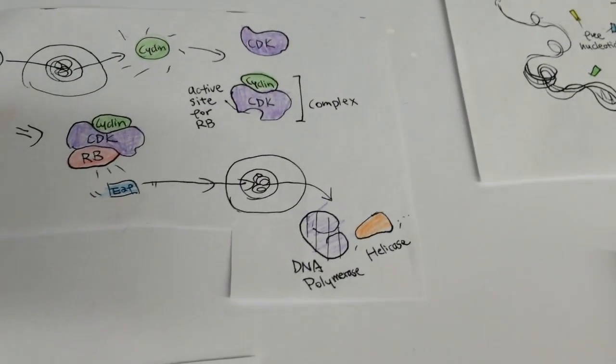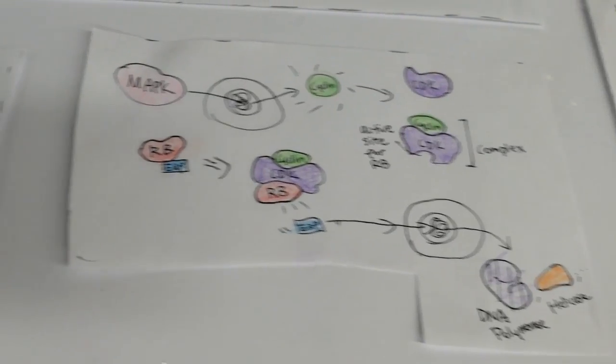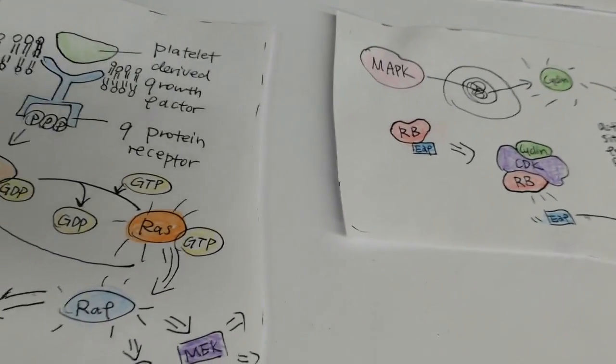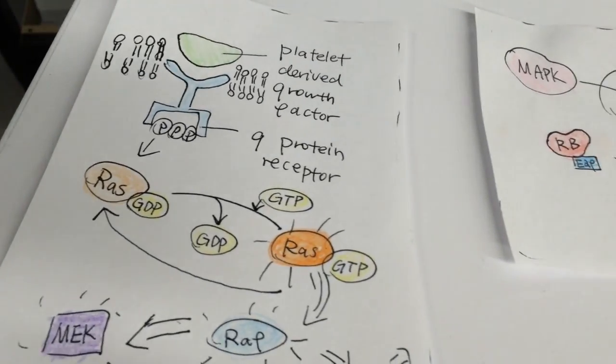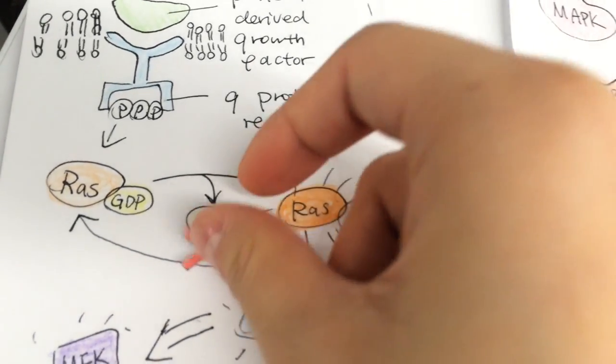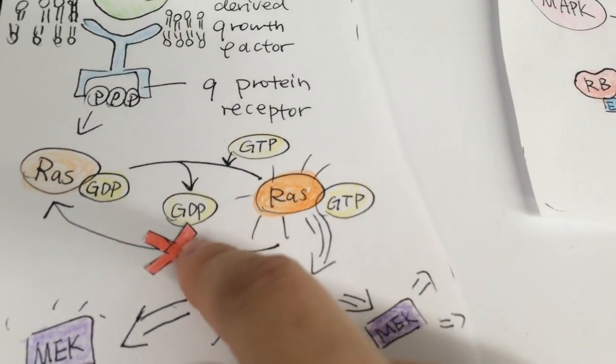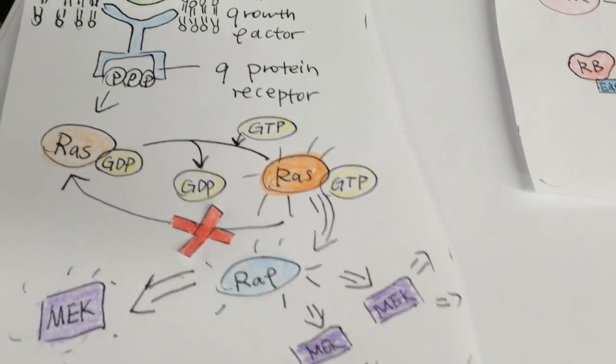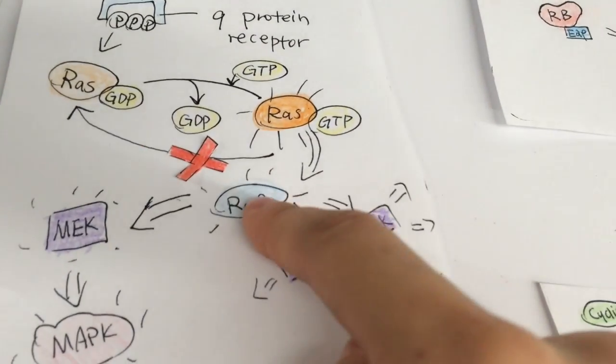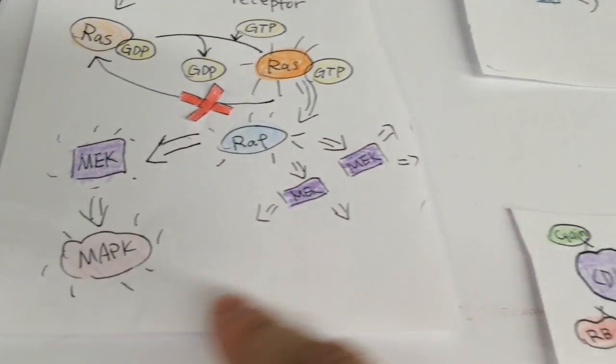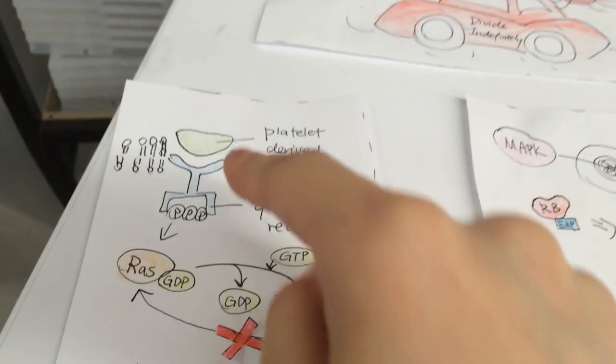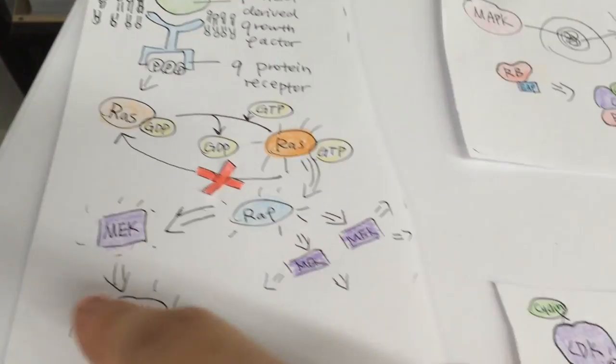In the cancerous cell, its proto-oncogenes are mutated into oncogenes. RAS, for example, might remain active forever after being activated by the receptor. This is problematic because then RAF would be constantly activated as well, and the entire protein cascade is no longer controlled by the initial signal.